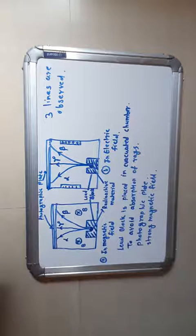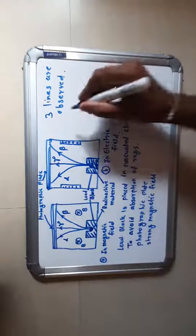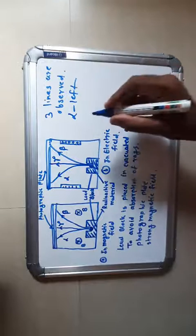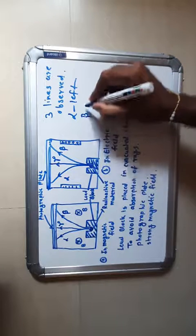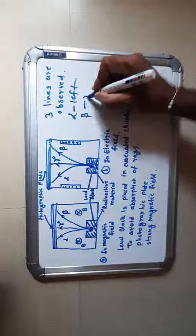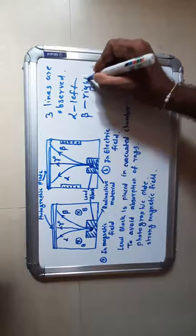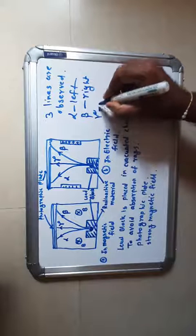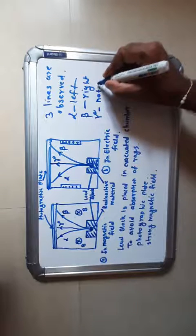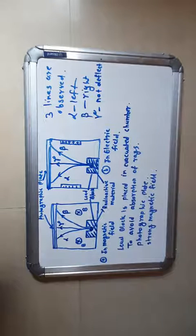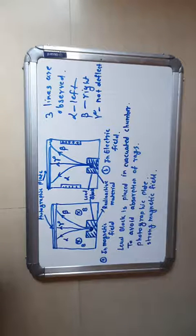Alpha particles are deflected towards the left, beta particles are deflected towards the right, and gamma rays are not deflected. The deflection of beta particles is more as compared to alpha particles.